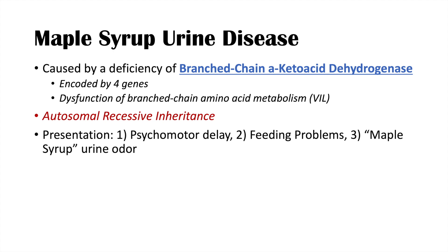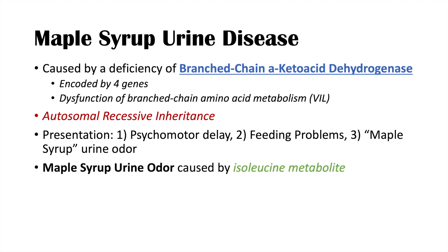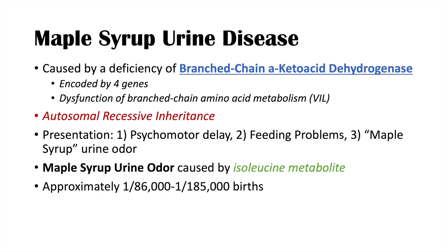The condition commonly presents as psychomotor delay, feeding problems, and maple syrup urine odor — those are the three major presentations. The maple syrup urine odor is caused by an isoleucine metabolite. This condition is quite rare, with a prevalence of approximately 1 in 86,000 to 1 in 185,000 births.